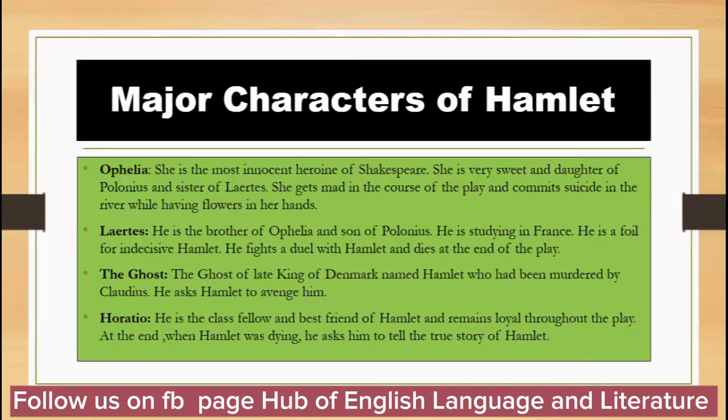Next is Ophelia. She is considered the most innocent heroine of Shakespeare. She is very sweet, daughter of Polonius and sister of Laertes. She goes mad in the course of the play and commits suicide in a river while holding flowers in her hands.